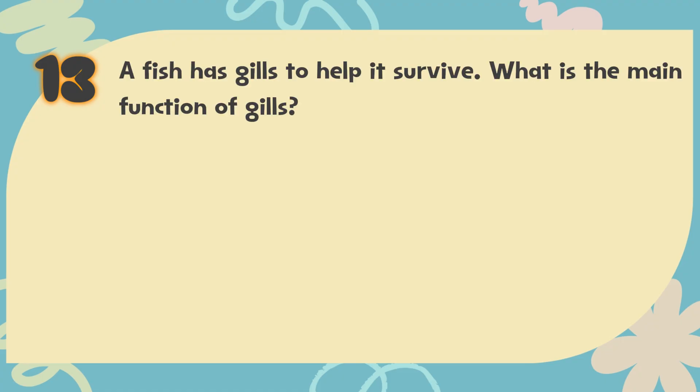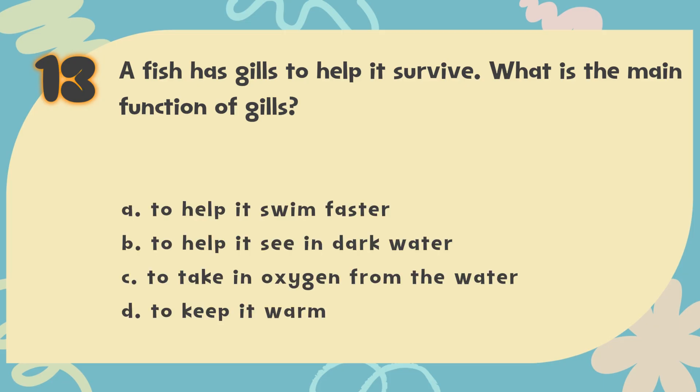Number 13: A fish has gills to help it survive. What is the main function of gills? The choices are: A. To help it swim faster, B. To help it see in dark water, C. To take in oxygen from the water, D. To keep it warm.